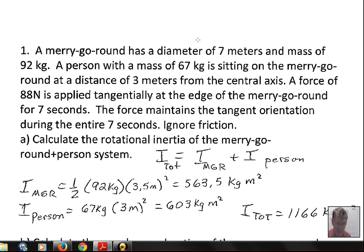We have a person with mass 67 kilograms positioned 3 meters from the central axis. You might ask how is it possible the person could be 3 meters from the central axis. Well, diameter of 7 meters means radius of 3.5 meters, so we're all right with this distance of 3 meters.